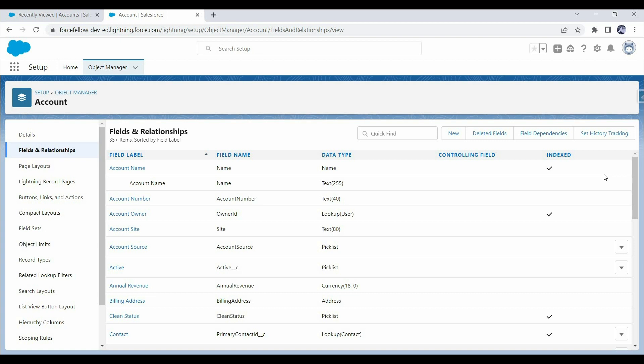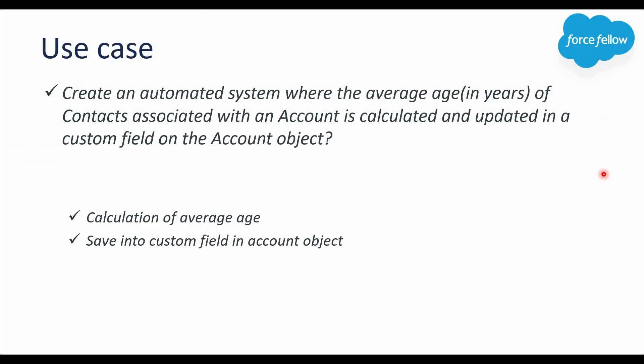We have created the new field to store average age. Now let's discuss what approach we should use to automatically calculate and save average age. This is a rollup scenario where we need to roll up all the child records, do the calculation, and update the calculated value into the parent record. If we have a Master-Detail relationship, we can use the out-of-the-box Roll-Up Summary feature. We don't have a direct way to calculate average with it, but using roll-up summary we can calculate sum and count, and average can be derived using formula fields.